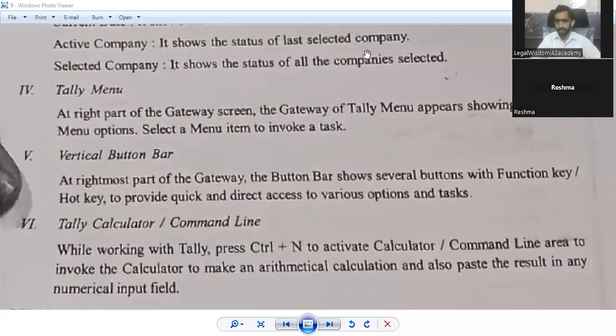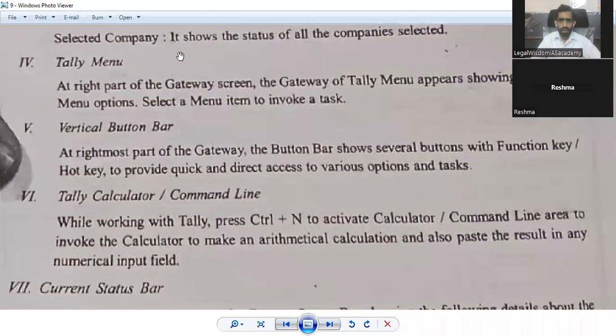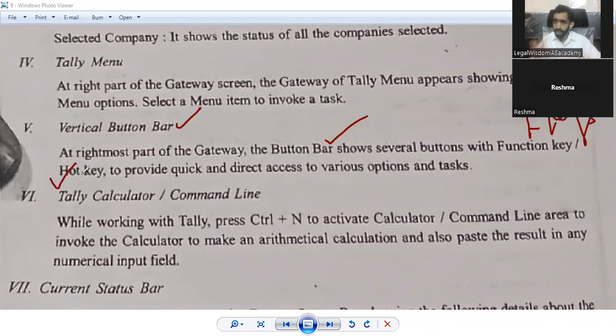The fifth one is the vertical button bar. At the right most part of the gateway, the button bar shows several buttons with function keys, also known as F keys. Hotkey means you can select your preferred option and make that key. That is known as hotkey - to provide quick and direct access to various options and tasks. If you want to open a file which is saved somewhere in the data, if you frequently open that file, you can directly make a hotkey for that file. For example, select Control plus F, Control plus D, Control plus E. When you press that hotkey option, the repeated file, the most frequently opened file will be on the screen.